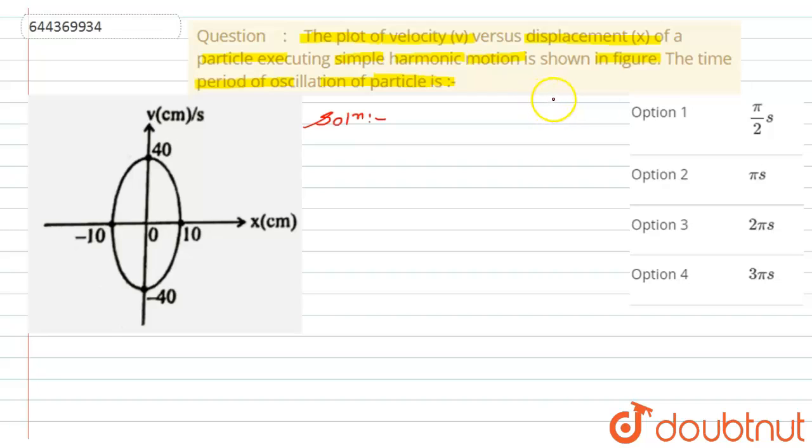According to the question we have to find here the period of oscillation for the particle. Now if you look to the graph, we can see here the maximum velocity of the particle is 40 centimeter per second, while the maximum amplitude for the particle is 10 centimeter.